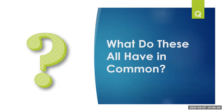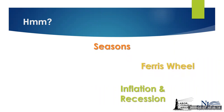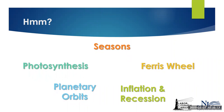Before we talk about workshop objectives, which is what I really do like to do at the beginning of every workshop, what I want to do first is give you a little pop quiz because I think that's always fun. So my pop quiz is: what do all of these things have in common? Seasons, Ferris wheel, inflation and recession, the orbits of the planets — any guesses? Photosynthesis. What do we think these all have in common?